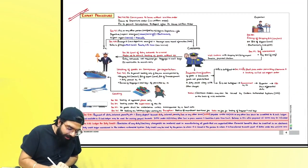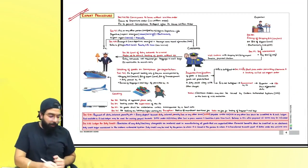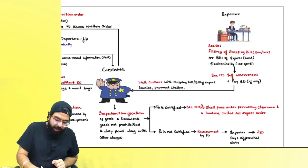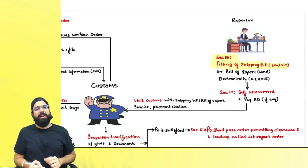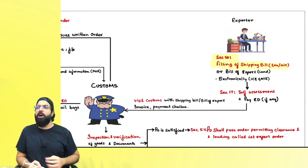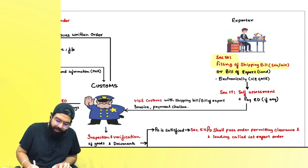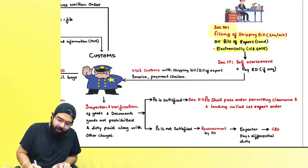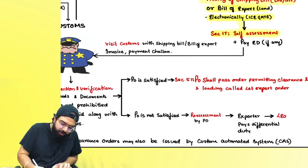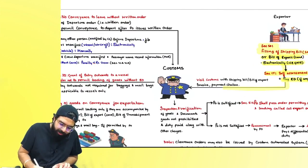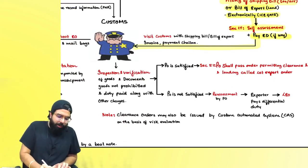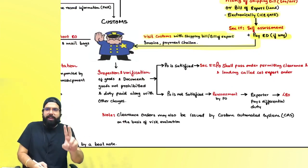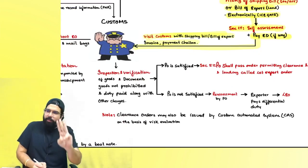Now for export procedure: section 50 says you have to file a shipping bill in case of sea or air, and a bill of export in case of land, electronically on the ICEGATE website. You will do self-assessment and pay the export duty. Then you visit customs with the shipping bill or bill of export, payment challan, invoice, etc.